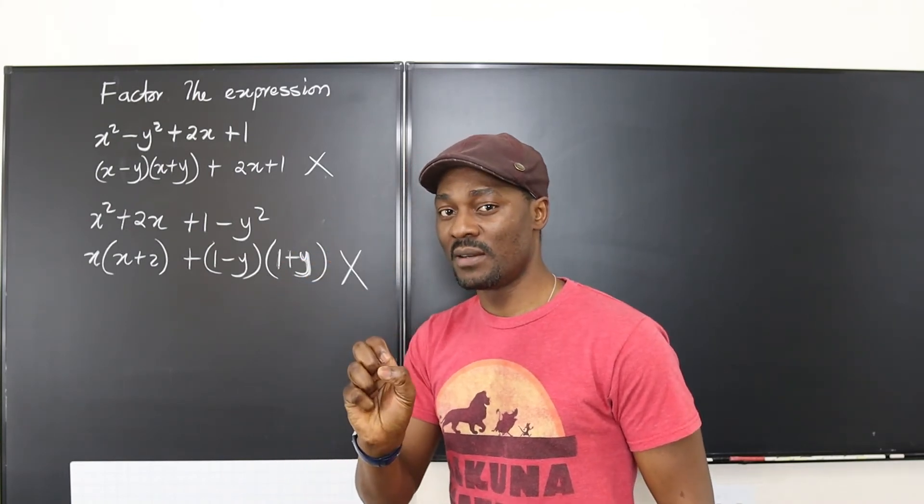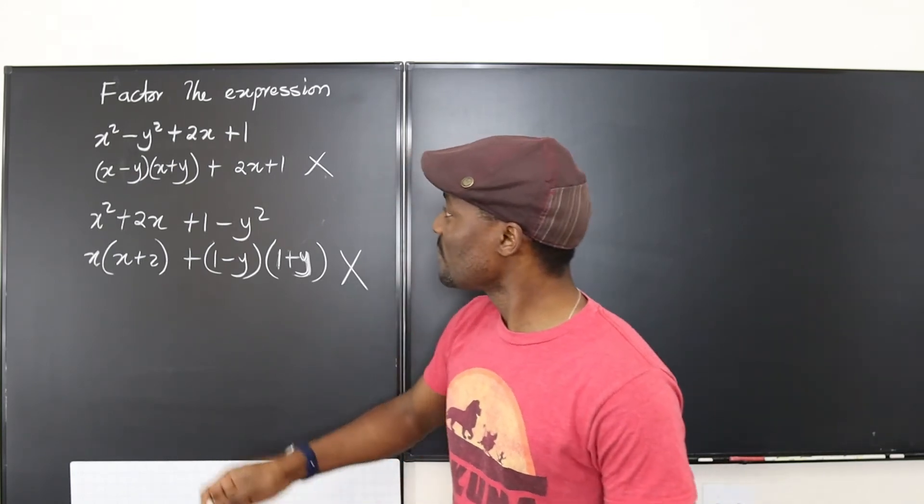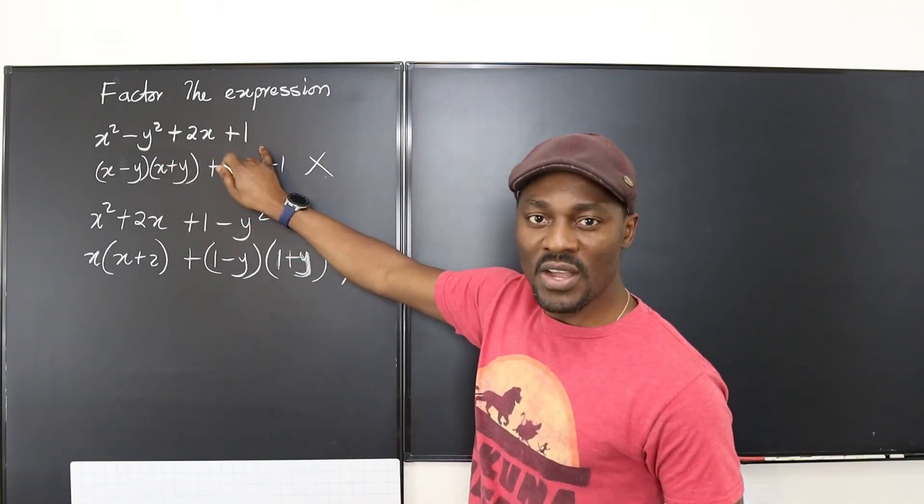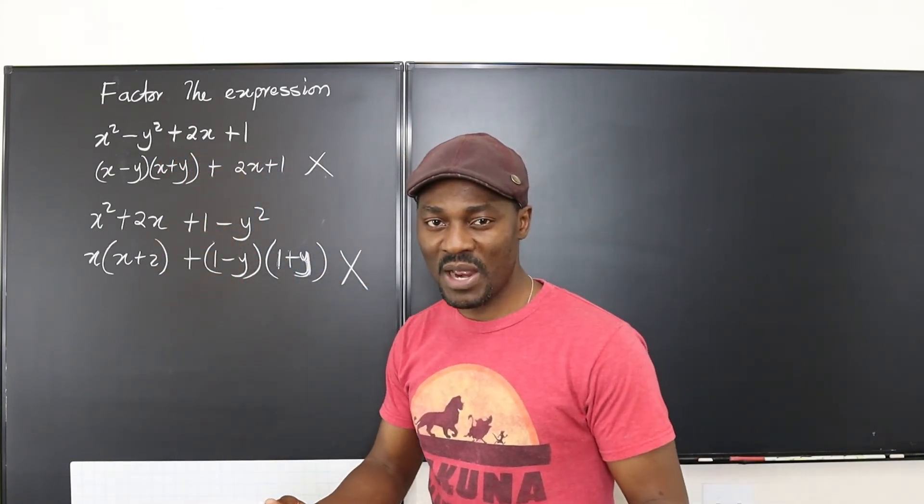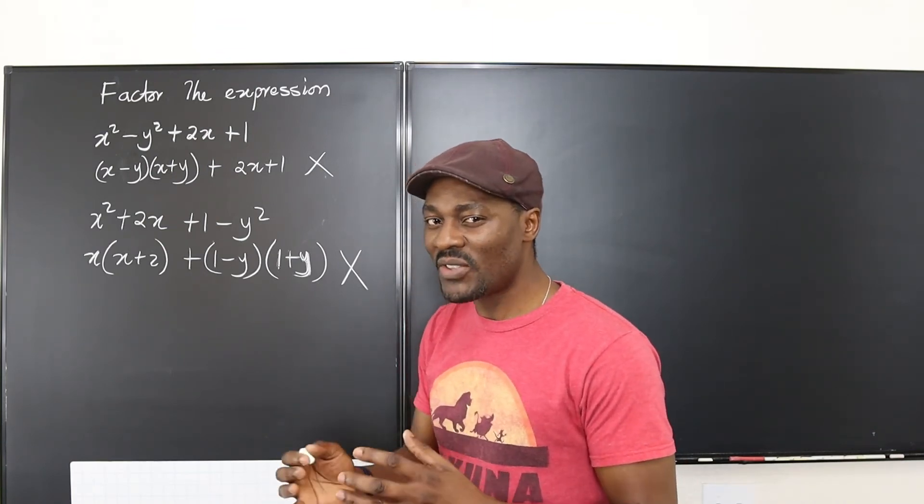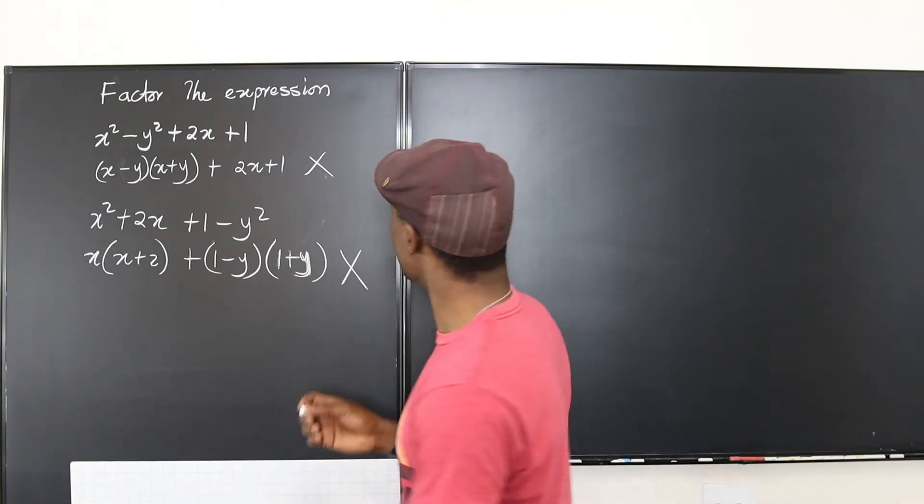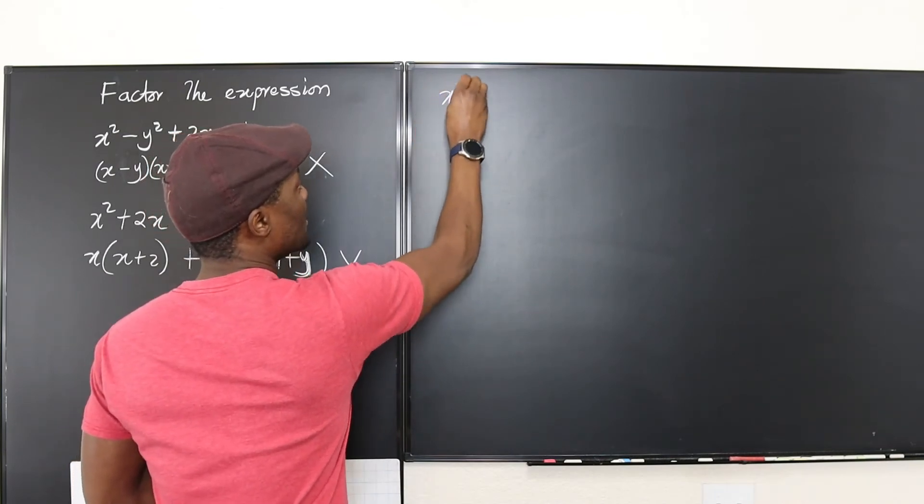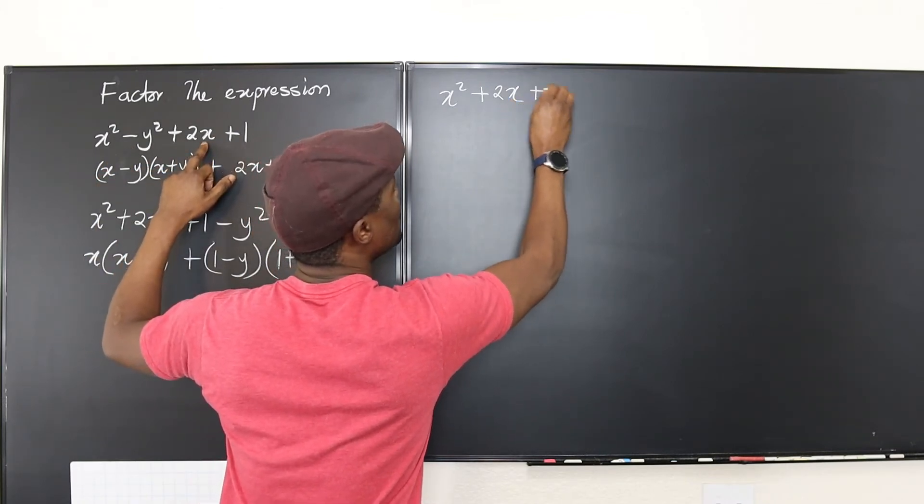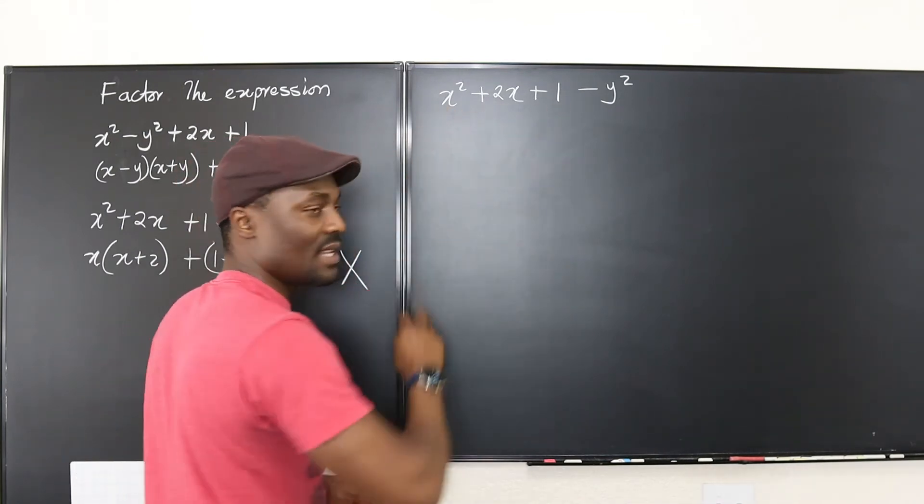Take three things that can go together. For example, you can see that x², 2x, and 1 can go together. It looks like a quadratic expression. Now once you see that, maybe you can factor that as if you want to solve a quadratic equation. So we're gonna try the third option, which will be x² + 2x + 1 - y².